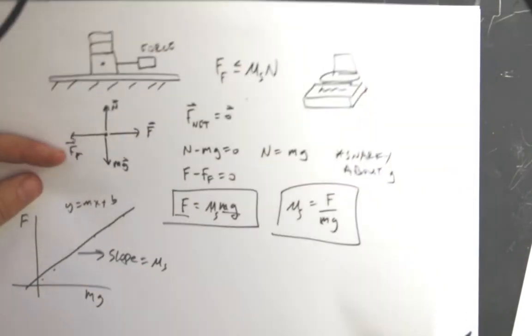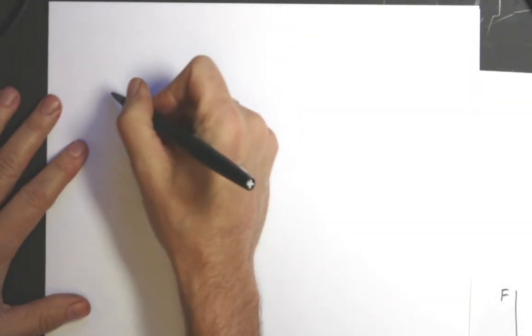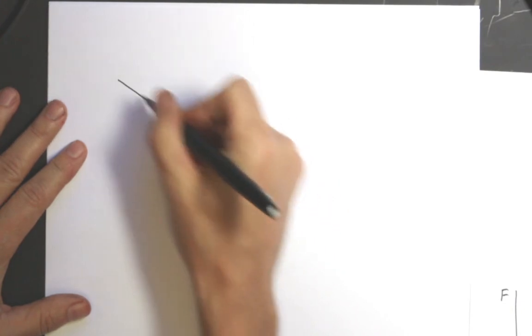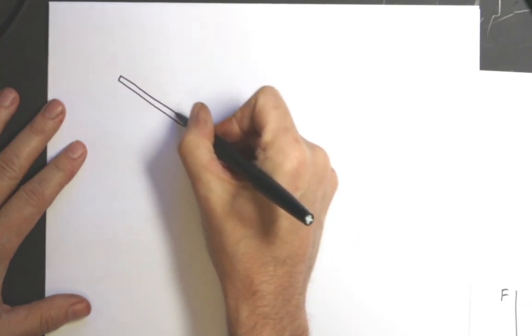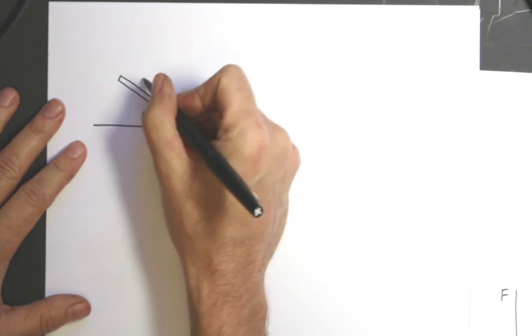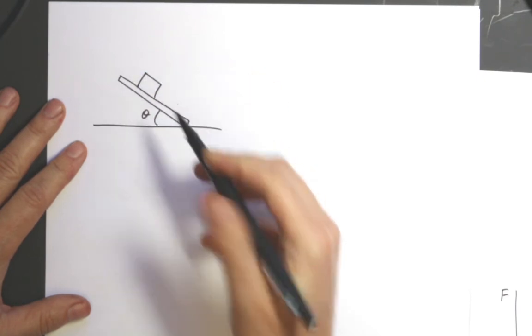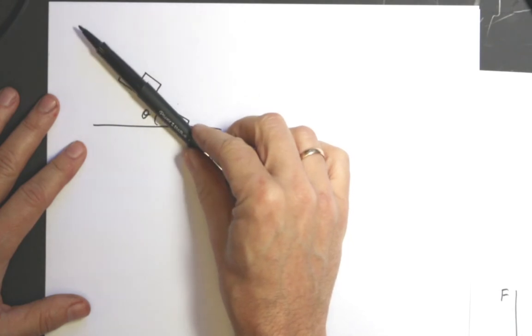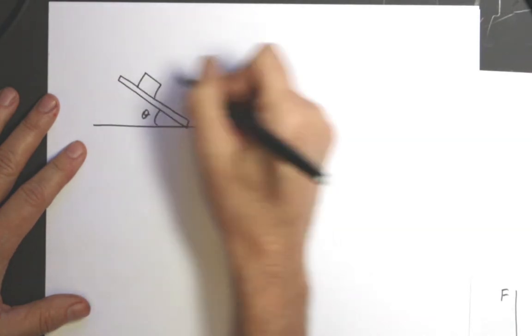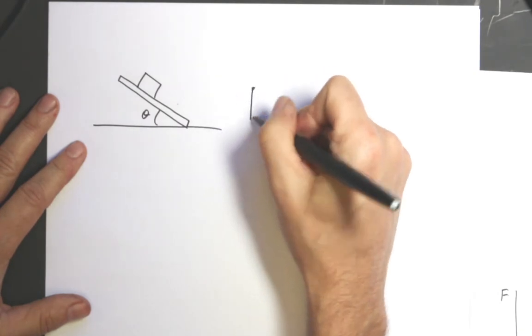There's another way to do this, and this is the way that we do it in lab. It's the same idea, except if you don't have a spring scale or something like that. If I put this on a movable board and I lift it up and I can measure the angle, at some point it'll start to slide.